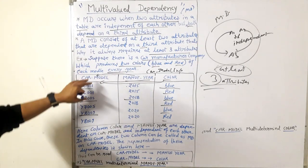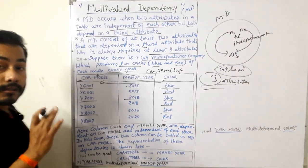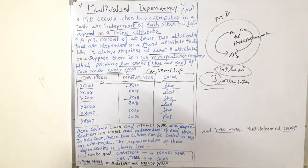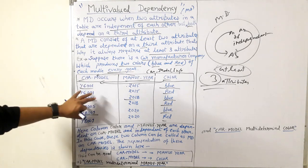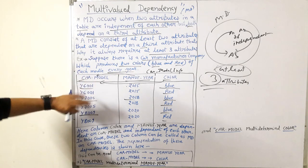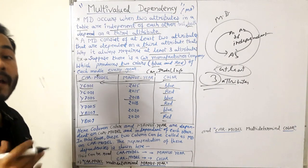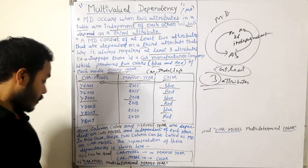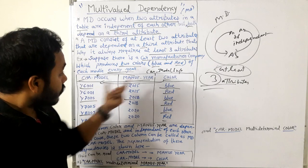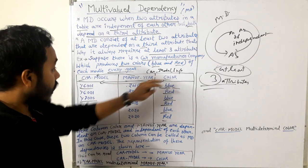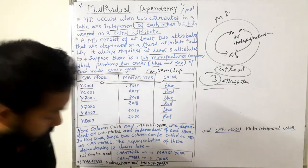So what can I say? There exists multi-valued dependency in this table. Now you got what is multi-valued dependency and how it actually exists in a table. There exists some representation to denote multi-valued dependency. In this case, car model and color - color is dependent on the car model.